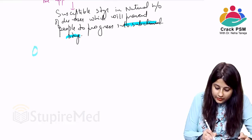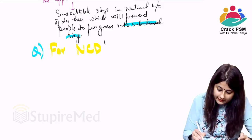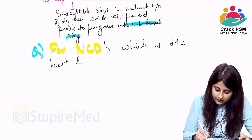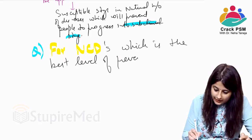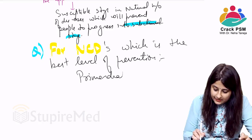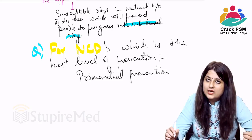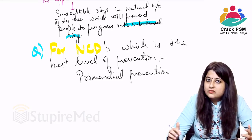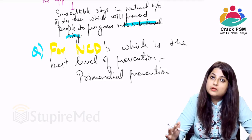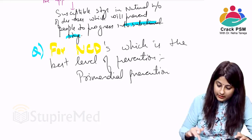An important question: for NCDs, which is the best level of prevention? For NCDs, the best level of prevention is primordial prevention.